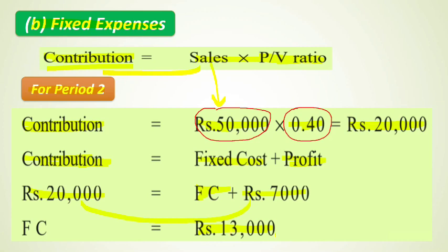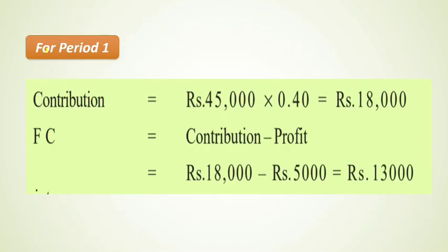Since the question states fixed expenses are equal in both periods, the fixed cost for Period 1 is also ₹13,000. However, we will still solve it for practice, because if exam data differs you should know how to solve it fully rather than taking shortcuts.